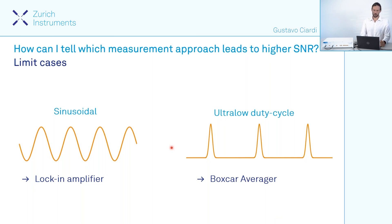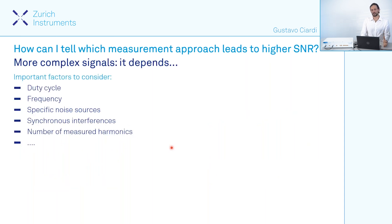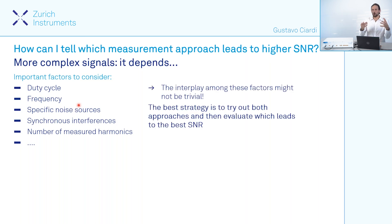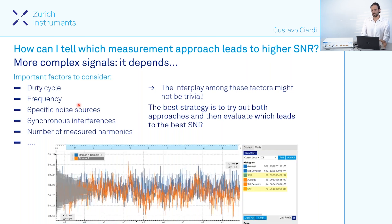However, for more complex signals, which is generally the case, there is no straightforward answer to this question. This is because the duty cycle is of course an important factor, but there are also other things to consider — for example, the actual frequency of the signal, specific noise sources, synchronous interference at exactly the same frequency of my signal, and also the measurable harmonics the instrument can provide. The interplay among all these factors can be very non-trivial.